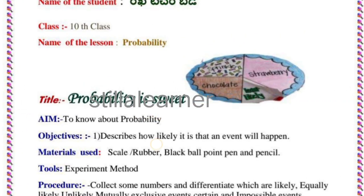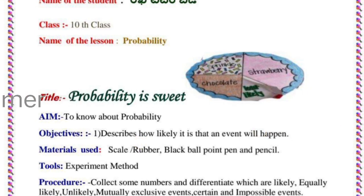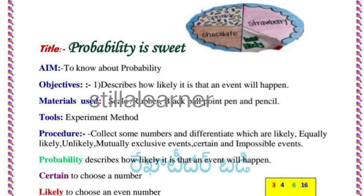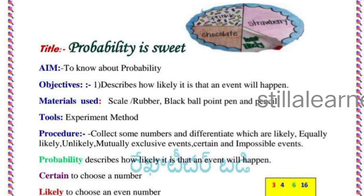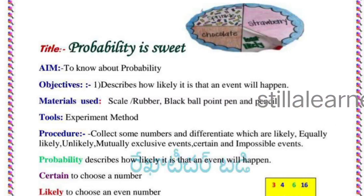Then write down the title, which is Probability is Sweet. Aim: to know about probability. Next, objectives: describe how likely it is that an event will happen. Materials used: scale, rubber, black ballpoint pen and pencil.